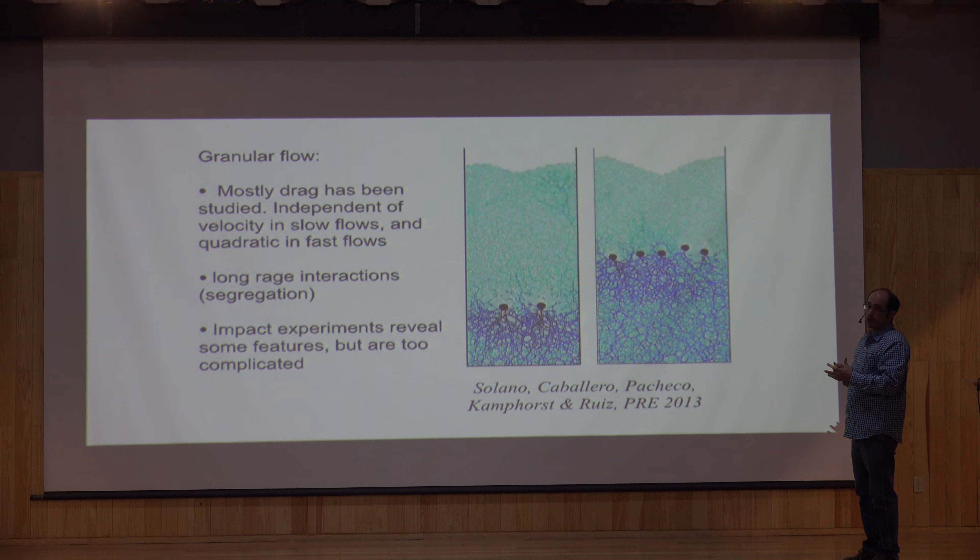It turned out to be a very complicated system and a very complicated scenario because it was time dependent, dependent on the height, relative speeds, and so on. They found it was hard to understand the interaction between intruders, but they found repulsion when there is a sort of jamming between the intruders, and attraction when there is a sort of Bernoulli effect.